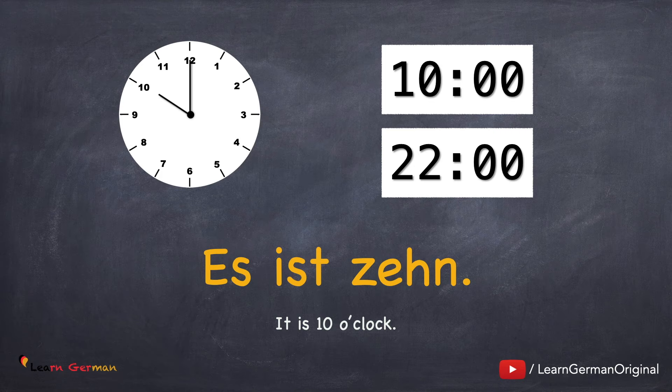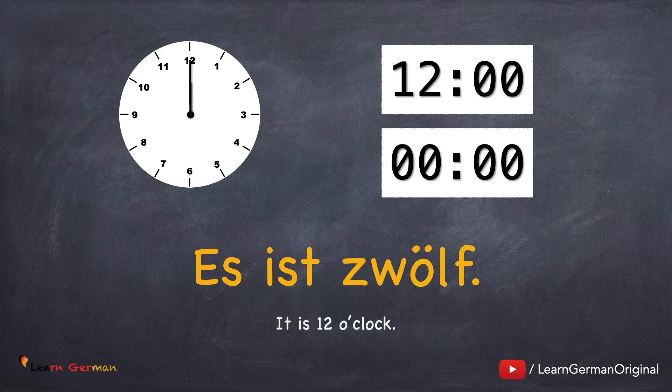Es ist abends um zehn. Es ist zwölf. Oder Es ist mittags um zwölf. And when it's midnight, you can say Es ist Mitternacht. And this way you would read out all other hours of the day. Just remember not to use Uhr anywhere.